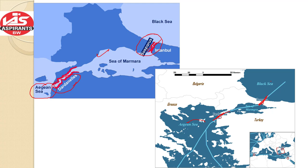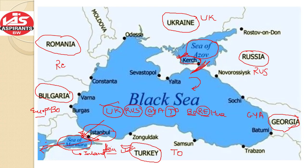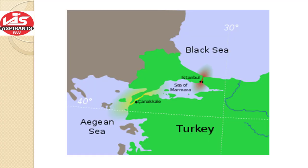So let us revise the three straits. The first one is the Kerch Strait, which connects the Sea of Azov to the Black Sea. The second one is the Bosphorus Strait, connecting the Black Sea to the Sea of Marmara. And the third one is the Dardanelles Strait, connecting the Sea of Marmara to the Aegean Sea. And the countries surrounding the Black Sea: UK Rus gaya toh Bor hua. You can also see here — the Sea of Marmara is a completely inland sea in Turkey, with the Bosphorus Strait connecting to the Black Sea and the Dardanelles Strait connecting to the Aegean Sea. The Kerch Strait connects the Black Sea with the Sea of Azov.